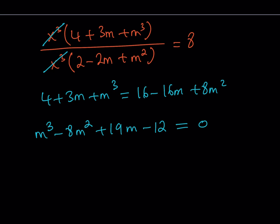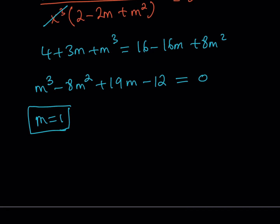One of the first things to check with polynomials is m equals 1 or negative 1. Looking at the coefficients: 1 minus 8 plus 19 minus 12 equals 0. Bingo — m equals 1 is a solution because the sum of the coefficients is 0, which is given by p(1). So we know one root, and now we can do polynomial or synthetic division. Or we can arrange the terms so it's completely factorable by manipulating the expression so each piece is divisible by (m minus 1).